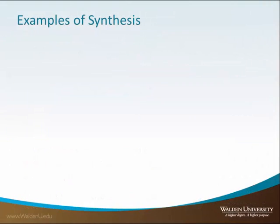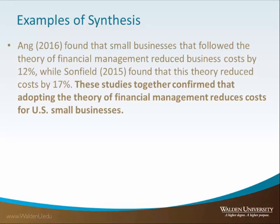Here's an example. In this example, Ng, 2016, that's source number one, and Sohnfield, 2015, that's source number two — they both are using this theory and found that it reduced costs by both 12% and 17%. So this is my evidence. I have one sentence, but it has two pieces of evidence, because we're talking with two different sources: Ng and Sohnfield, one and two.